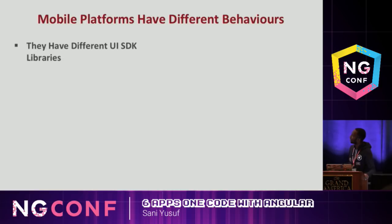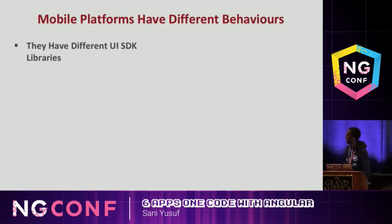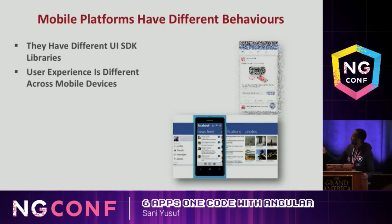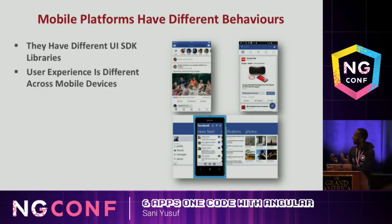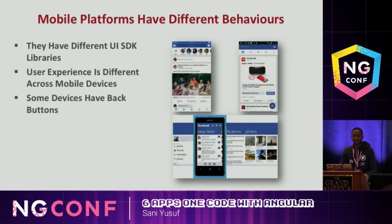Cordova supports all major operating systems: Android, iOS, Windows, Ubuntu OS, Blackberry if you still use one. It has a plugin interface for extending these features. So we've solved the mobile problem, right? Well, not really - the mobile ecosystem has different UI SDKs. The mobile platforms also have different user experiences. Android users already know which one is their app, iOS users know which one is theirs, Windows people know which one is theirs. Some devices have back buttons - Android has back buttons. iOS has one button - well, now they have none because every year they remove something.